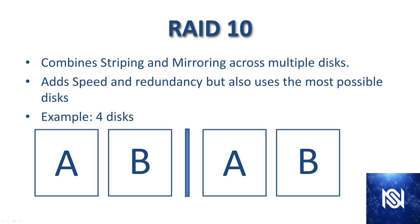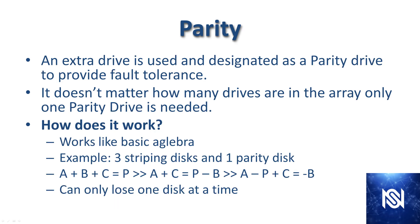RAID 10 combines striping and mirroring across multiple disks, adding speed and redundancy, but it uses the most disks. In this example with four disks, one copy of the data is striped across A and B, then completely duplicated on the other side. It essentially turns four disks into two fully redundant disks, doubling write speed while being fully redundant.